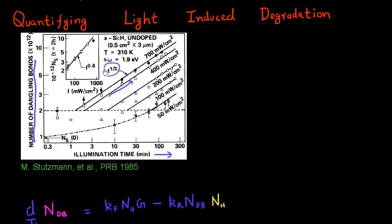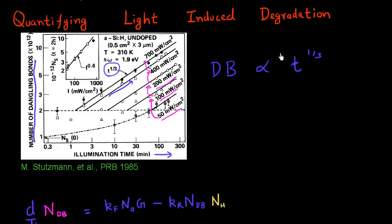You can measure the slope of this line and that gives you the exponent for the power law. The number of dangling bonds increases as a function of time with a cube root dependence on the illumination time. Similarly, if you increase the intensity of the light — from 50 to 100 to 200 — the number of dangling bonds increases. The functional dependence on the illumination rate or generation rate also comes out to be a power law, with a dependence of G to the power of 2/3.